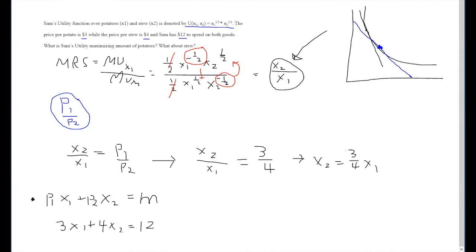This means using our equation that we found here, x2 equals 3 fourths x1, we can substitute in for x2. What that looks like is 3x1 plus 4 times 3 fourths x1 equals 12.